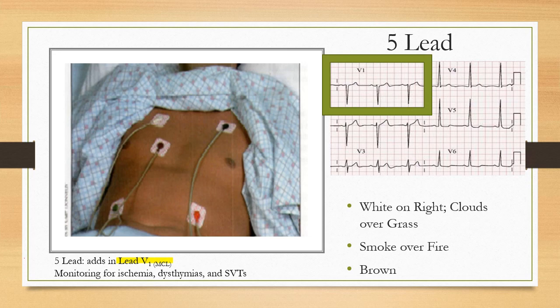The five-lead electrode placement builds on the three-lead pattern. White goes under the right shoulder beneath the clavicle. 'Clouds over grass' adds the green electrode beneath the rib in the mid-clavicular line. Black (smoke) and red (fire) match the three-lead placement. The brown electrode — chocolate close to the heart — goes at the fourth intercostal space next to the sternum in the center.